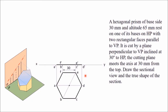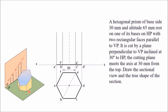This height is given as 65 mm. From this center, draw one axis line of height 65 mm. Similarly, draw the other vertical edges from A, B, C, D — these four edges will be visible. All will be of the same height, 65 mm. Close it — this is the top base of the hexagonal prism. This height is 65 mm.